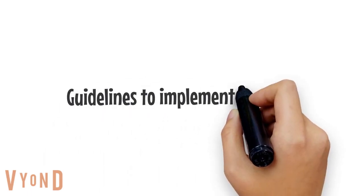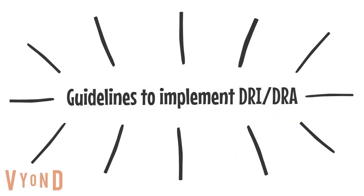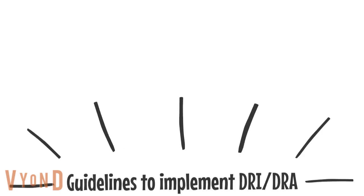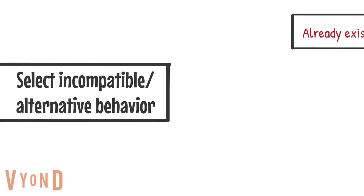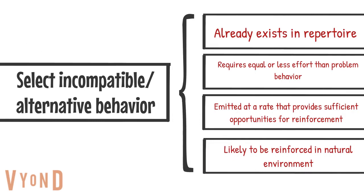Here are some guidelines for implementing DNRI or DNRA. The first is selecting the incompatible or alternative behavior. You want to choose a behavior that already exists in the learner's repertoire, requires equal or less effort than the problem behavior, and is emitted at a rate that provides sufficient opportunities for reinforcement and is likely to be reinforced in the natural environment.